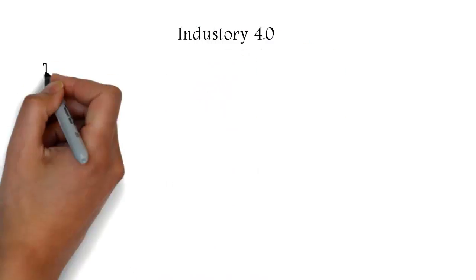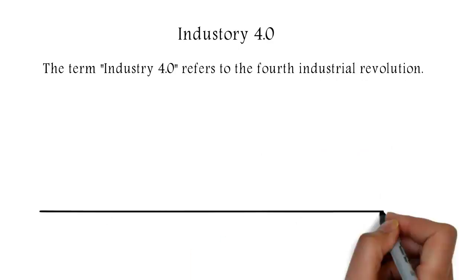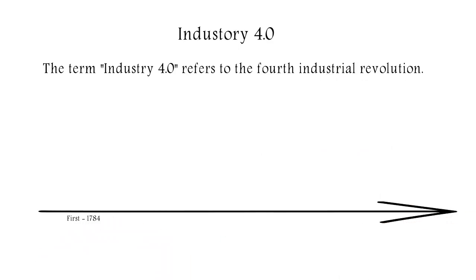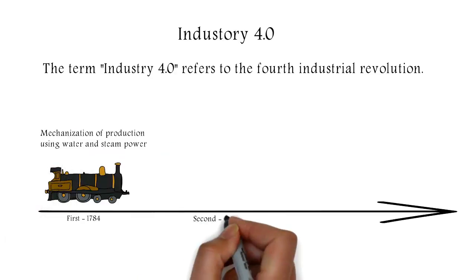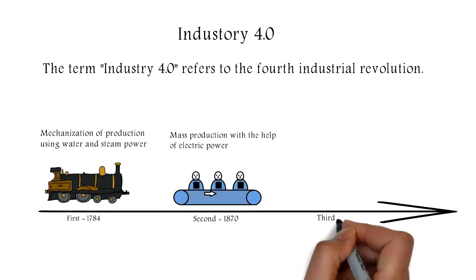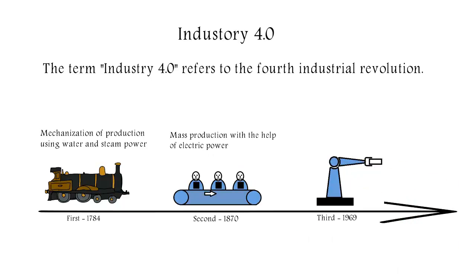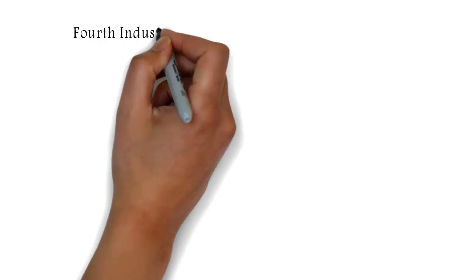Industry 4.0 refers to the fourth industrial revolution. The first was in 1784, mechanization of production using water and steam power. The second in 1870, mass production with the help of electric power. The third in 1969, use of electronics and information technology to further automate production.